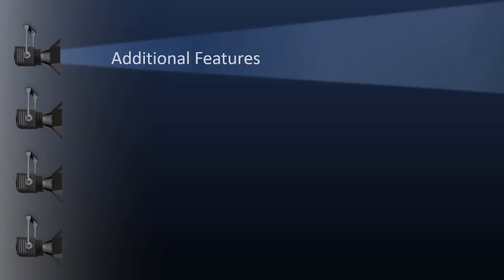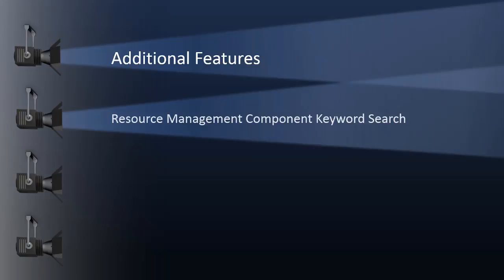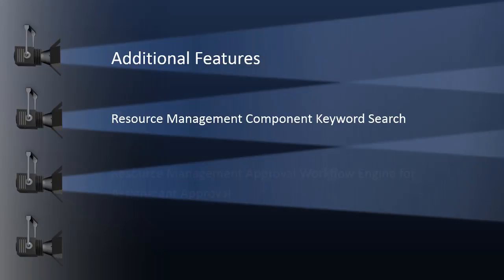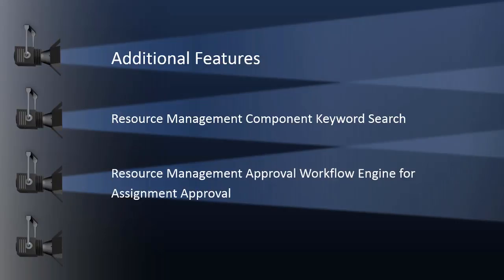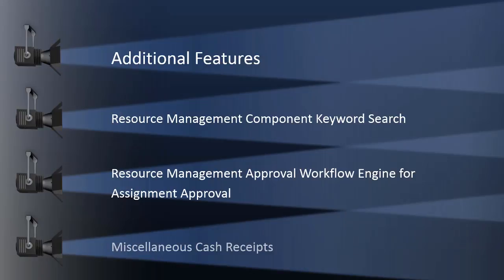The following features have also been added in Image 23. Keyword search capabilities have been added to Resource Management Service Order and Assigned Resource Pages, which allows you to search across multiple attributes of the components. You can use phrases, words, or partial strings to perform your search. The Approval Workflow feature has been added for you to approve assignment status and assignment date. Miscellaneous cash receipts can now be printed using BI Publisher. This completes our discussion of additional features.